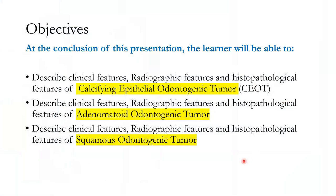Every lesson has an objective. At the end of it, you should be able to describe the clinical features and correlate with the radiographic and histopathological features of these three tumors: calcifying epithelial odontogenic tumor, adenomatoid odontogenic tumor, and squamous odontogenic tumor. We'll also discuss differential diagnosis and how to arrive at a final diagnosis.